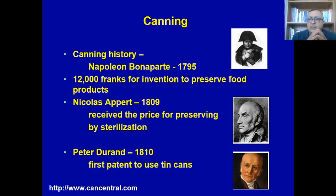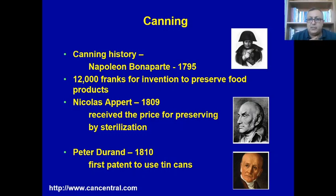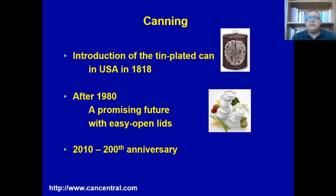We started with the idea of Napoleon Bonaparte, who introduced 3,000 francs for an invention to preserve food products. In 1809, Nicholas Acker received this prize for preserving food products by boiling them in jars and sealing them. Then, around 1810, the first potential use of tin cans was explored, and in 1818 the introduction of tin-plated cans in the USA marked the start of the canning process.